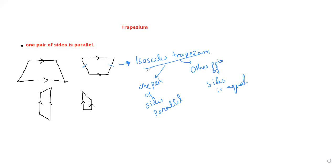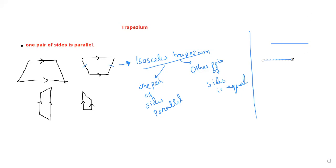If it becomes the same — what if I take a line which is parallel and equal? So this line, let's say five centimeters. And this line is also five centimeters and both are equal. If I join the points, what figure will be formed?